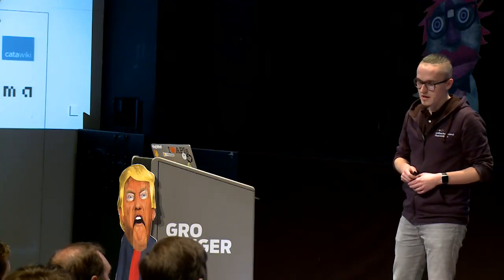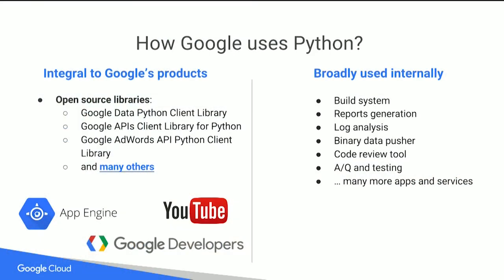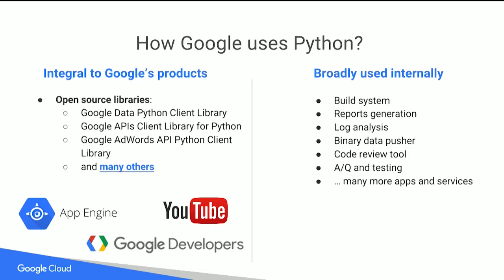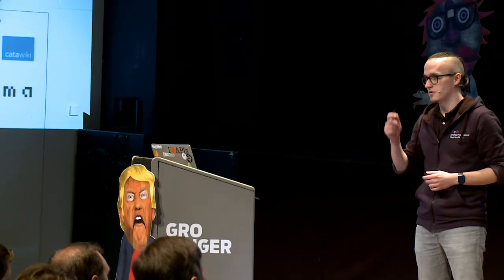From the Python perspective, it's integral to many Google products today. It's widely used on YouTube for video playback and template work. App Engine, the conception of Google Cloud many years ago — a platform-as-a-service where you could run apps in the cloud without caring about infrastructure — the first language it supported was Python. And most things you find in terms of Google APIs and clients for Google APIs always have Python support. It's a first-class citizen from the Google perspective.